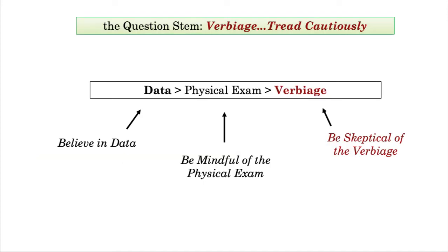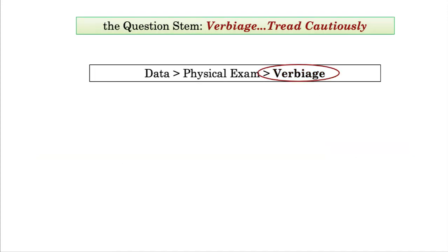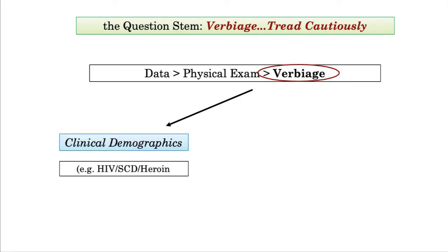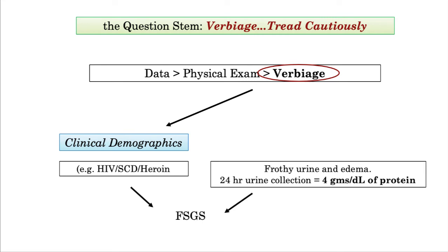Continuing our discussion of the question stem and the verbiage, you should be aware of the function of the verbiage. It serves two principal purposes. The first is to offer important clinical demographics, and in this example I use the background of HIV infection, sickle cell disease, or heroin use in a patient with frothy urine and four grams of protein. We know from the data the patient has nephrotic syndrome, but it is the clinical demographic information that leads us to the correct diagnosis of focal segmental glomerulosclerosis.